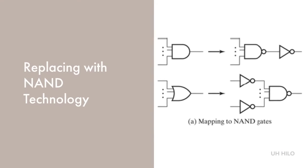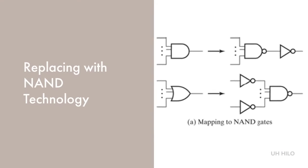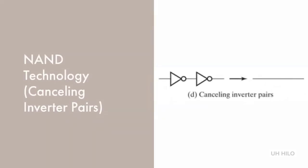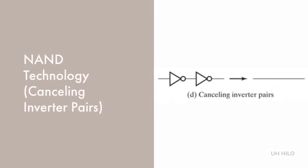Again, we start with the optimized diagram that consists of the AND, OR, and NOT gates, and then we replace each AND and OR gate with its equivalent circuit in NAND form, as you can see on this figure. We then cancel all the inverter pairs. This is the equivalent of a double negative in English.